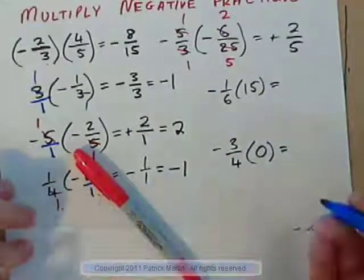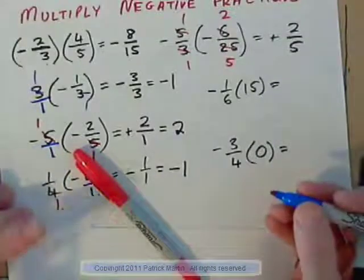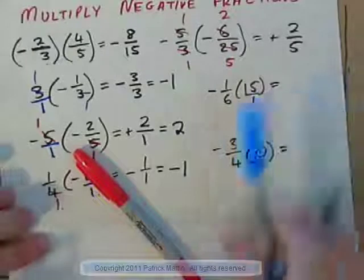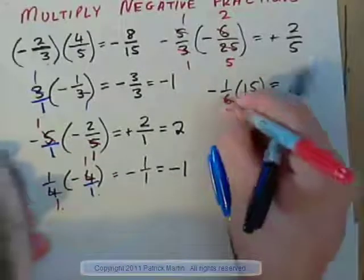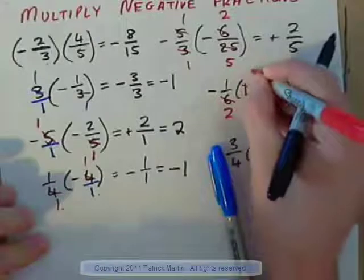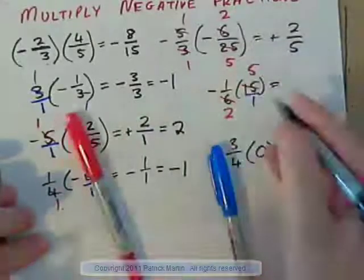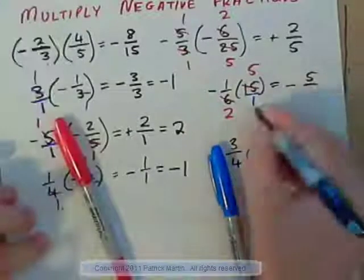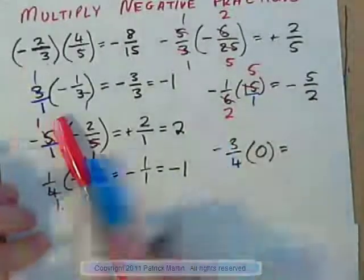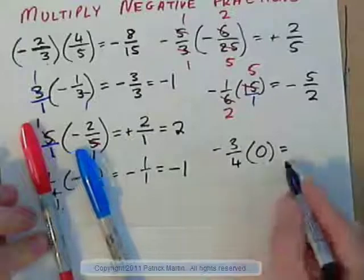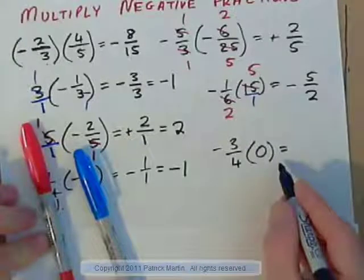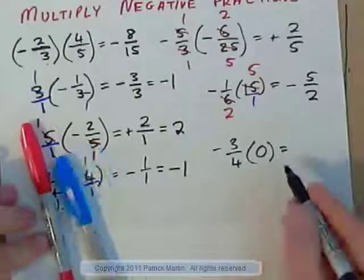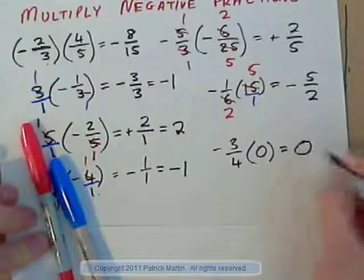This one here — press pause and see if you can get it. That's 15/1, and 3 goes into 6 and 15: 3 into 6 goes twice, 3 into 15 goes 5 times. Negative times positive is negative: 1 times 5 is 5, over 2 times 1 is 2. And write down the answer to this: negative 3/4 times 0. Well, what's anything times 0? Anything times 0 is 0.